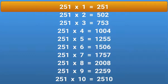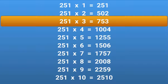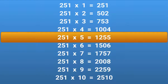251 × 1 = 251. 251 × 2 = 502. 251 × 3 = 753. 251 × 4 = 1004. 251 × 5 = 1255.